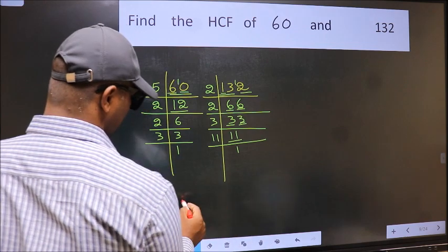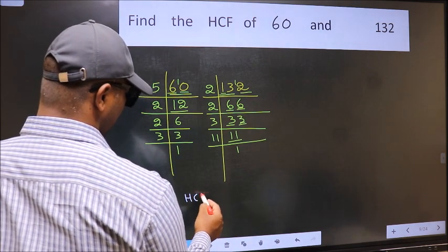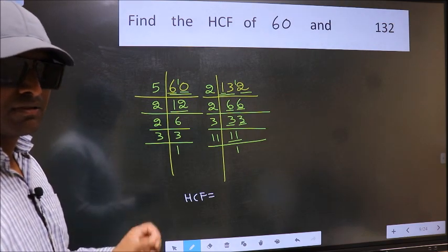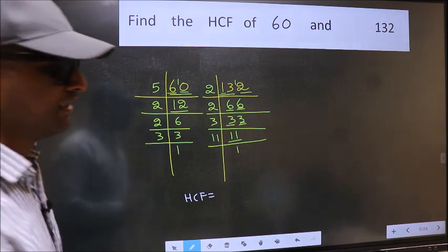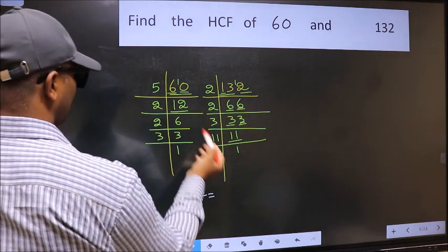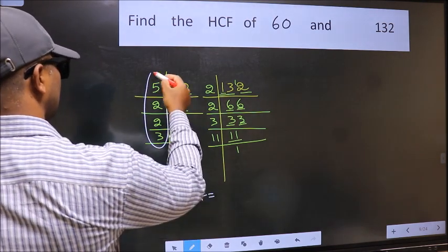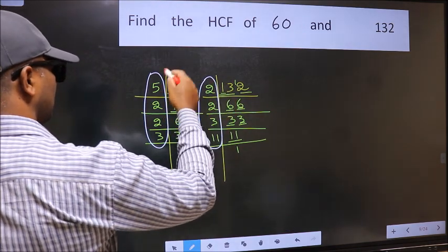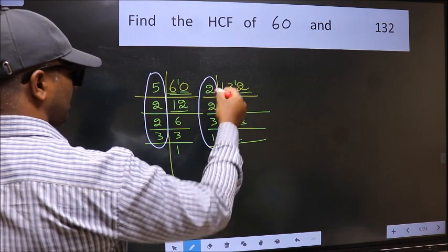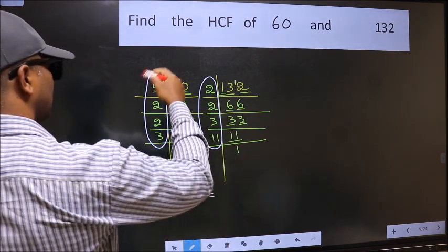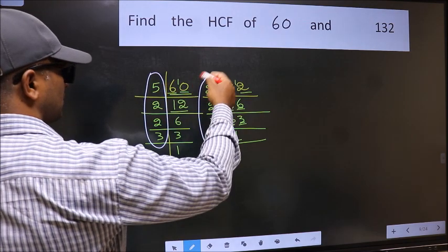Therefore, our HCF is the product of the numbers which should be present in these two places. That is here and also here. Here and also here. So now let us find the numbers which should be present here and also here.